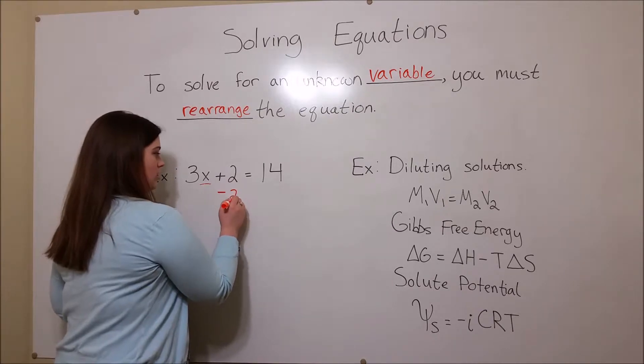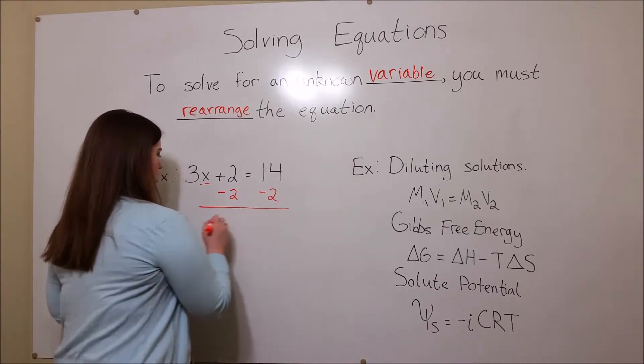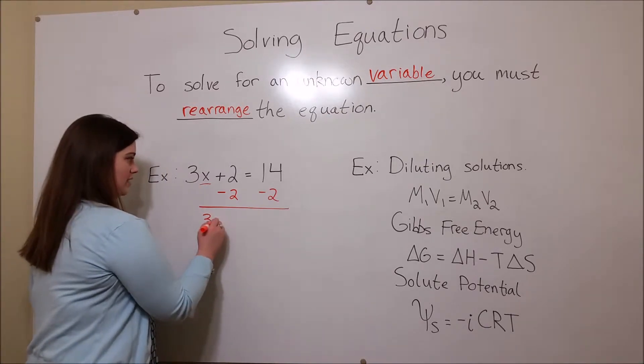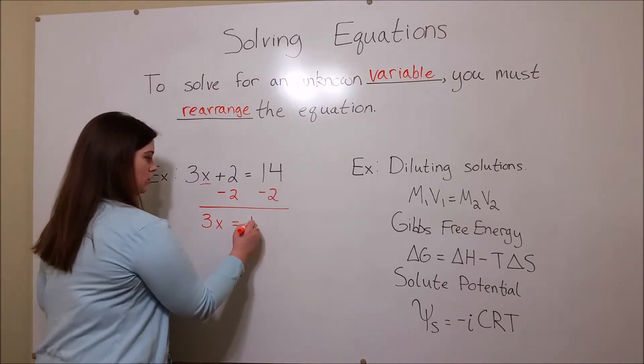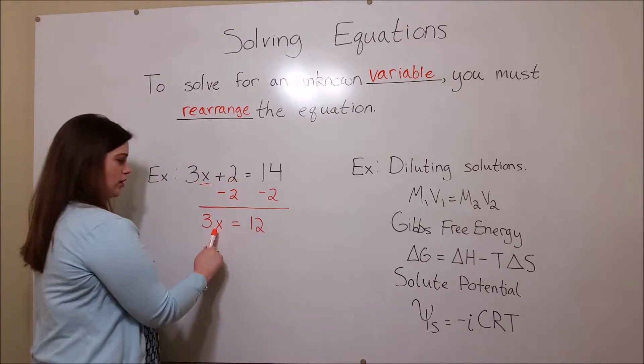So to do this, we will subtract 2 from each side, which gives us 3x equals 12. This is because 3x plus 2 minus 2 equals 3x, and 14 minus 2 equals 12.